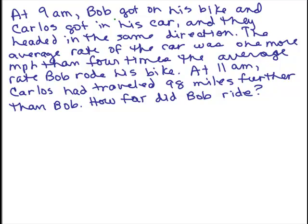At 9 a.m., Bob got on his bike and Carlos got in his car and they headed in the same direction. The average rate of the car was one more mile per hour than four times the average rate Bob rode his bike. At 11 a.m., Carlos had traveled 98 miles further than Bob. How far did Bob ride?